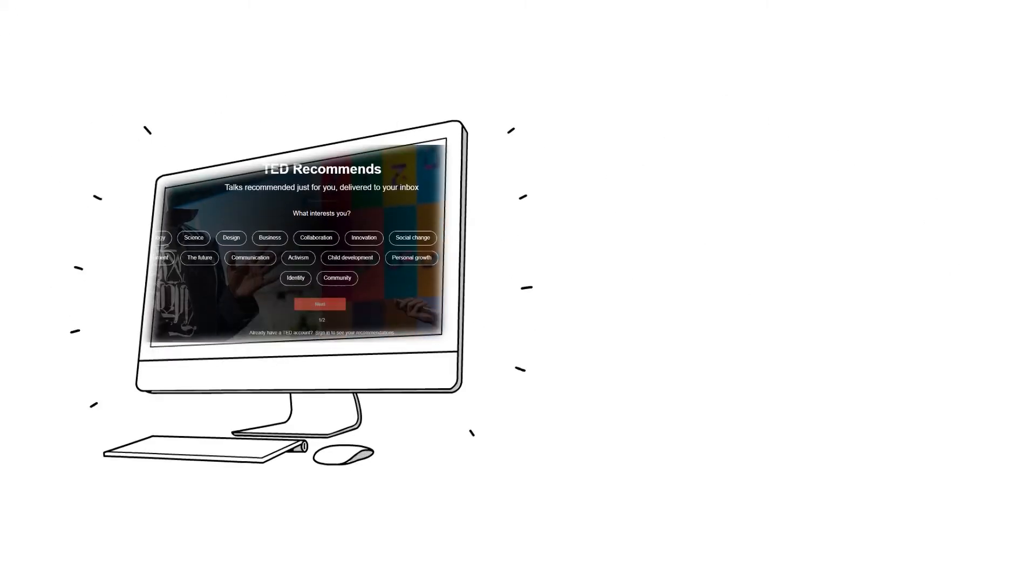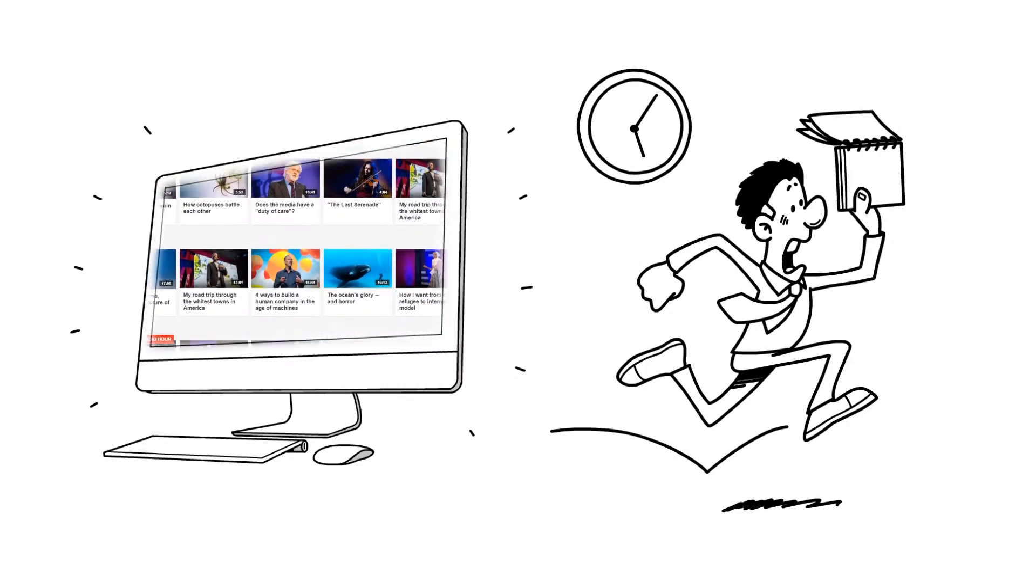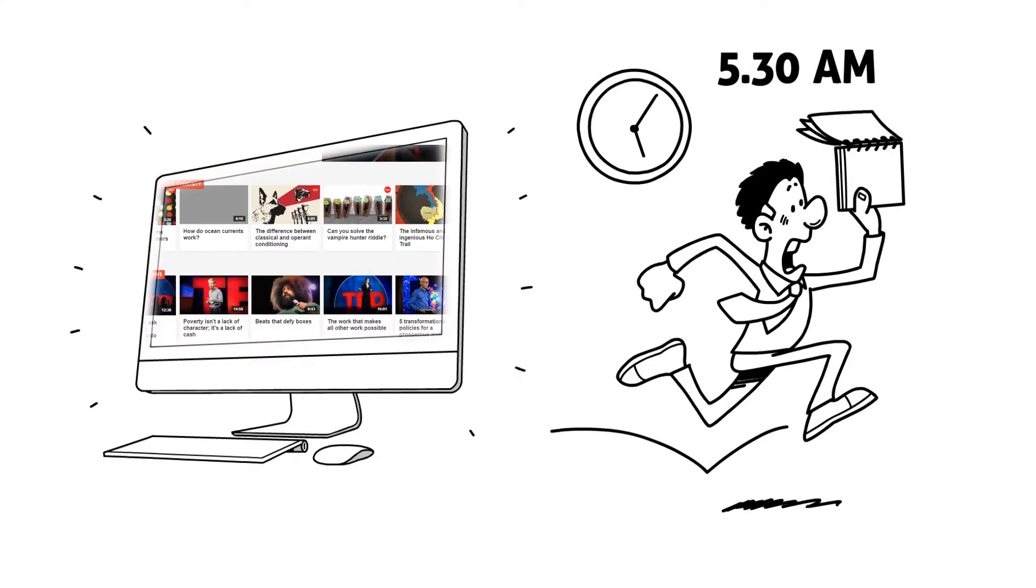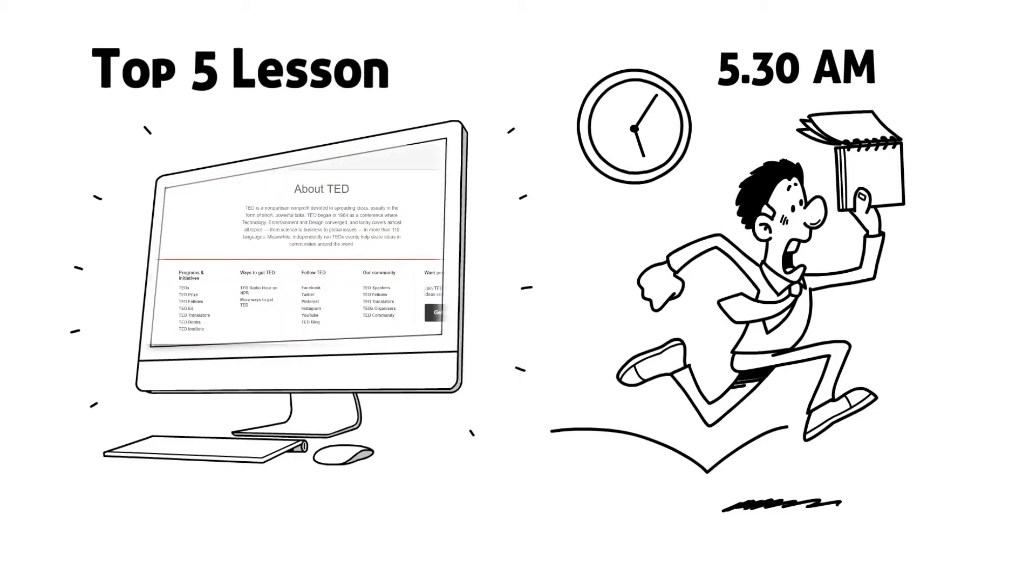From watching 296 TED Talks, to working 90 hours a week, to waking up at 5:30 a.m., he has done it all and he found a philosophy, strategy and tactics that improve his productivity. So here are the top 5 lessons from The Productivity Project.